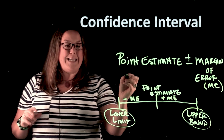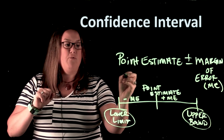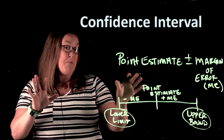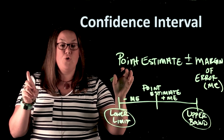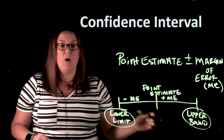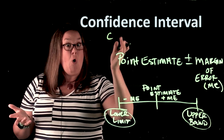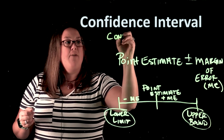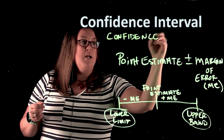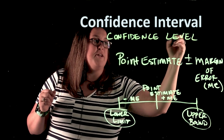So depending on the type of data that you're creating a confidence interval for, the point estimate can change. Essentially, it's that sample estimate that you're using to estimate the parameter you're creating an interval for. Now, all of the time with confidence intervals, you will have what's called a confidence level.